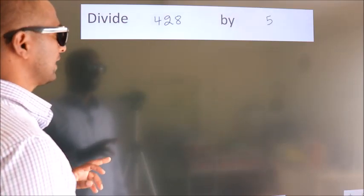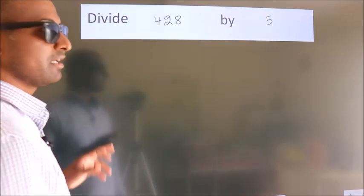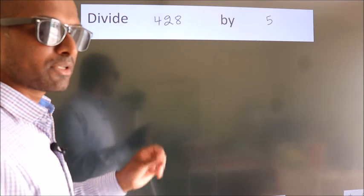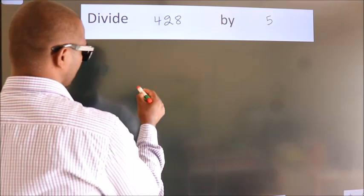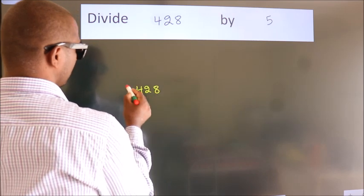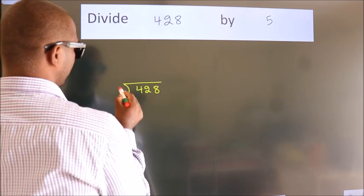Divide 428 by 5. To do this division, we should frame it in this way: 428 here, 5 here.